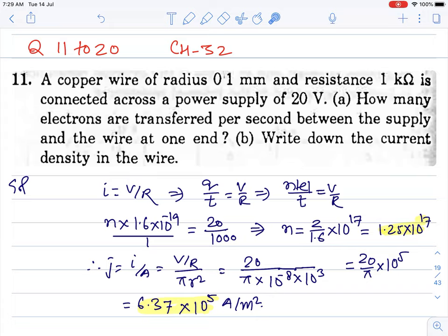Current density formula - what is current upon area of cross section. So V and R is given, small r is given in the area of cross section.